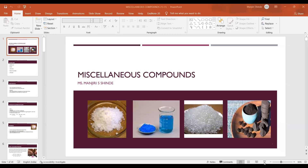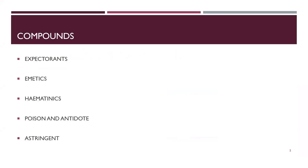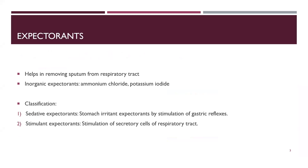Hello students, today we are going to cover miscellaneous agents. These are basically inorganic compounds responsible for some activity. We will look at what those inorganic compounds are, their uses, and how assays are done to check their purity. The categories we are going to cover are expectorants, emetics, hematenics, poison and antidote, and astringents.